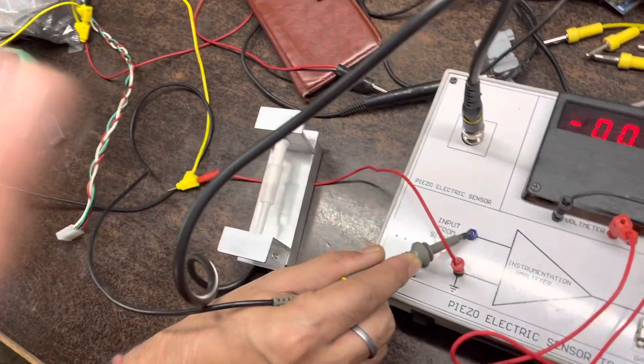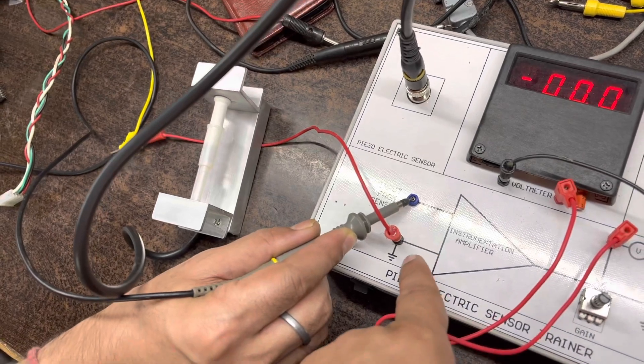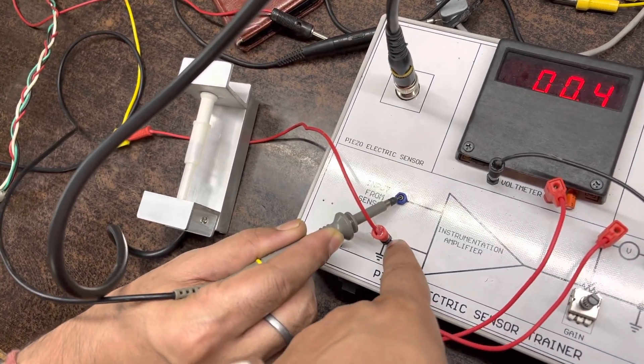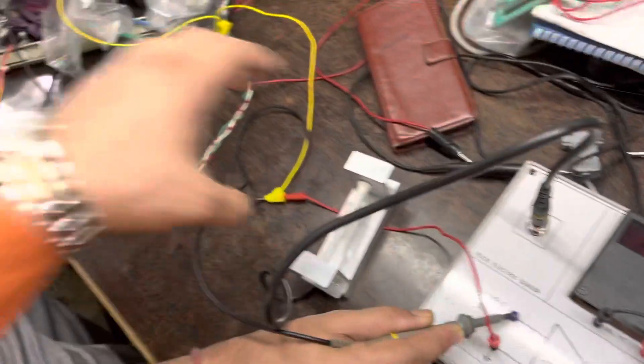But to see a proper result, you can use a DSO or CRO by putting ground to this one, signals to this point.